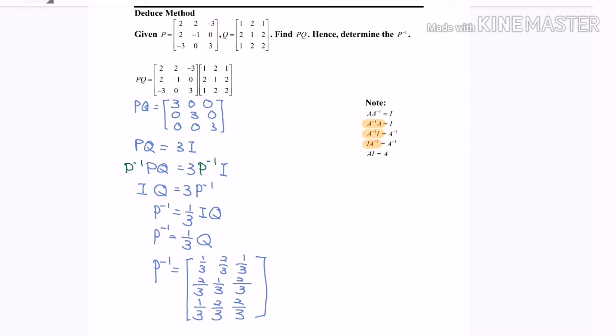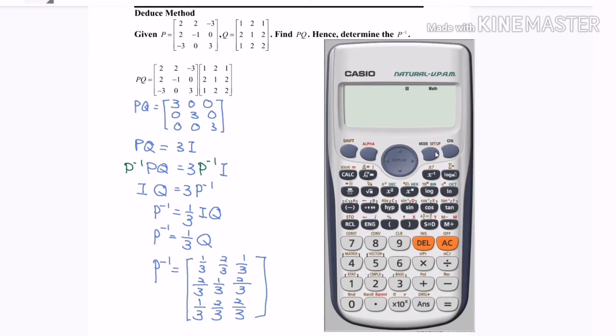So now we are going to discuss how to check the answer by using the calculator. Now you have to open up your calculator, then first step is to press the mode button. Then we have to choose the matrix which is number 6. Then in here we have to name the matrix P because we are going to find the inverse of P.